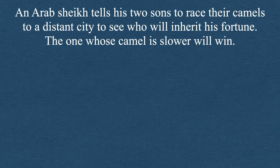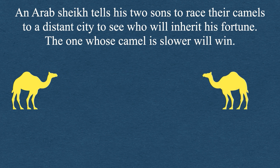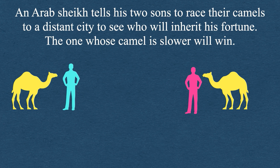An Arab sheikh tells his two sons to race their camels to a distant city to see who will inherit his fortune. The one whose camel is slower will win. The brothers, after wandering aimlessly for days, ask a wise man for advice. After hearing the advice, they jump on the camels and race as fast as they can to the city. What does the wise man say?